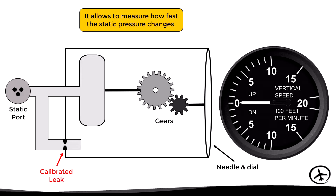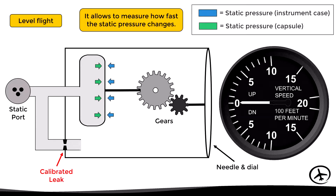Let's see how by means of an example. First, let's look at the level flight situation. In this case, the pressure inside the instrument case and the pressure inside the capsule are equal, therefore the needle will point zero feet per minute. The situation changes if the aircraft starts climbing or descending.